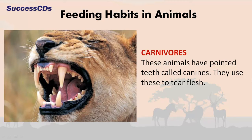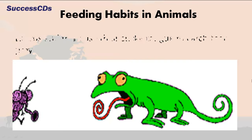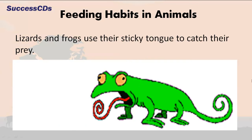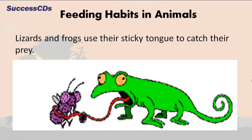Carnivorous animals have pointed teeth called canines. They use these to tear flesh. Rodents use their front teeth to bite and gnaw at their food — they nibble grains, nuts and fruits. Lizards and frogs use their sticky tongue to catch their prey.